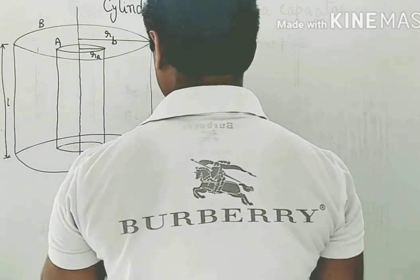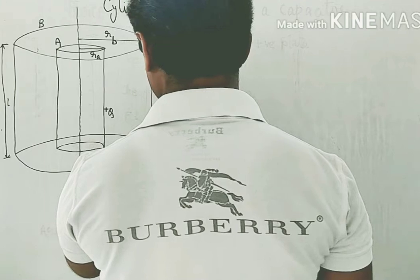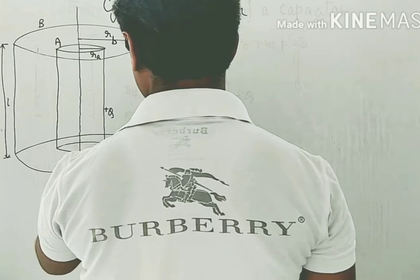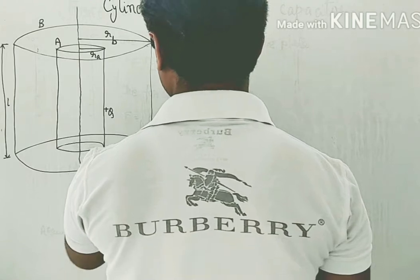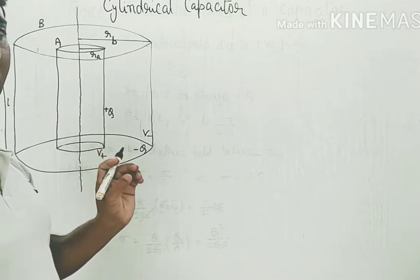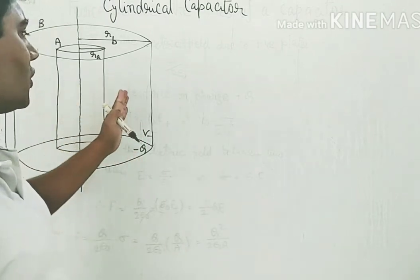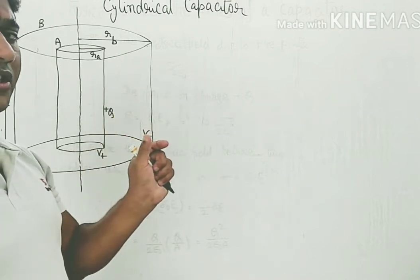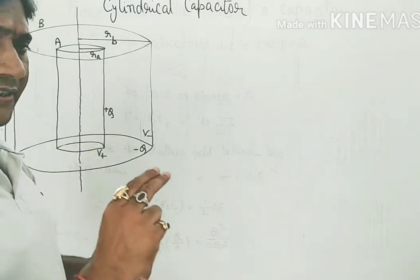Suppose the inner cylinder carries charge plus Q and the outer minus Q, with the inner at potential V+ and the outer at a negative potential. To calculate the electric field intensity at a point a distance small r from the axis, we consider a Gaussian closed surface of cylindrical shape and length small x.